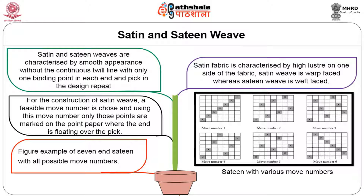With move number 4, from the first interlacement, the move is four to the right and one up, again producing a valid satin weave. Similarly, move number 5 produces a satin weave with only one interlacement per warp end. Move number 6, however, produces a right-hand twill — a diagonal line from right to left. Therefore, not all moves are possible: move 1 and move 6 cannot be used for constructing a seven-end satin weave.